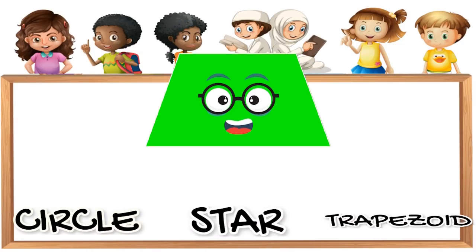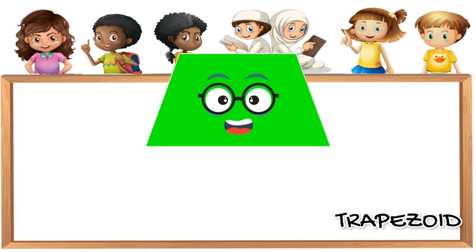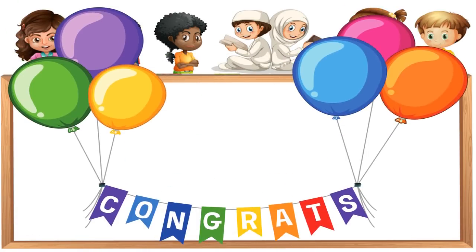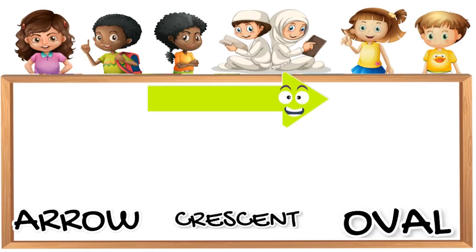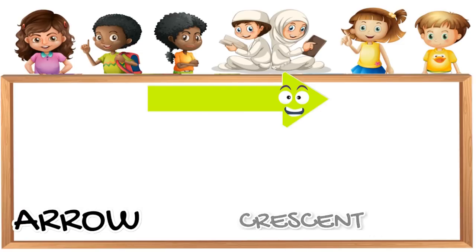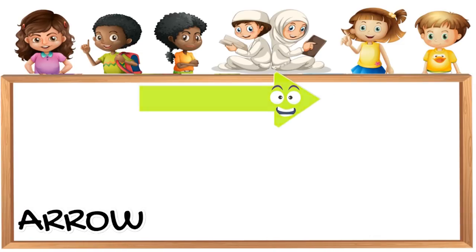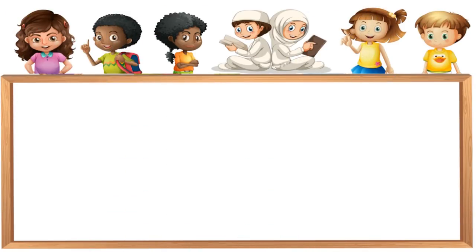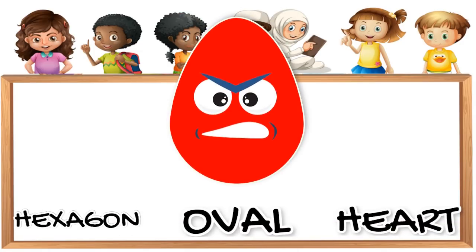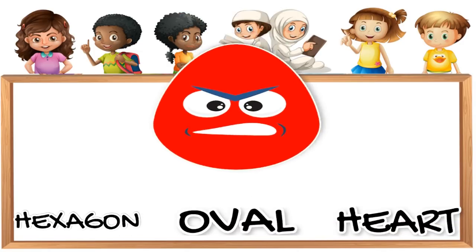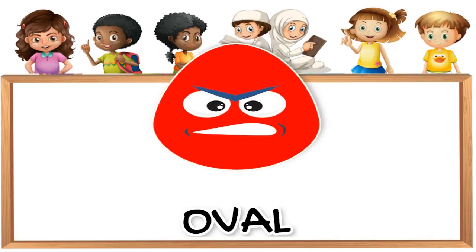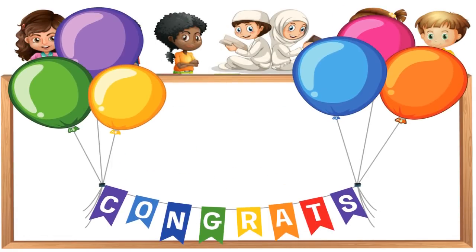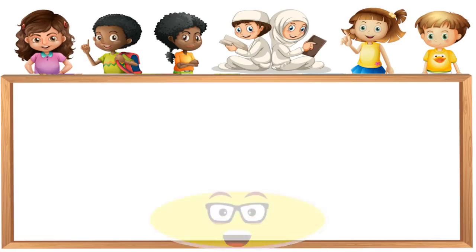What shape is it? Trapezoid. Excellent! Hooray! What shape is it? Arrow. Great! Hooray! What shape is it? Oval. Very good! Hooray!